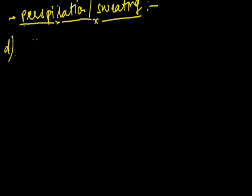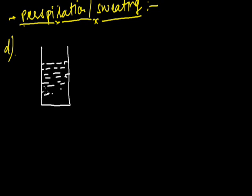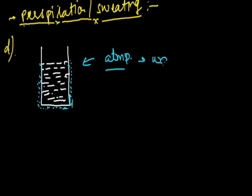Water droplets on the outer surface of a glass containing ice cold water: we often see that when we fill a glass with cold water or ice, there are water droplets on the outside of the glass. This happens because water vapors in the atmosphere come in contact with the cold glass and lose energy, getting condensed into liquid state — which we see as water droplets. The atmosphere also contains water vapors, and they get condensed when they come in contact with the cool wall of the glass.